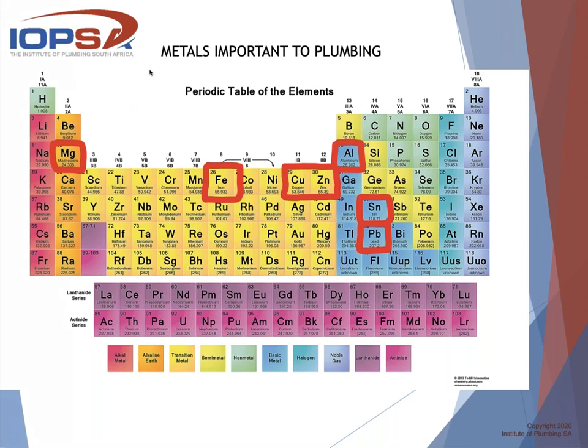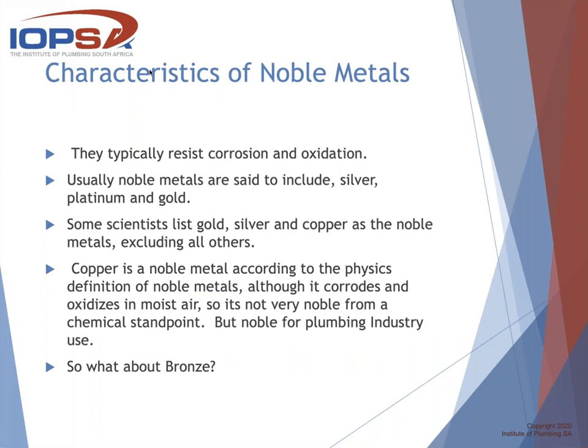Noble metals typically resist corrosion and oxidation. Corrosion occurs when you have moisture, metal, and oxygen together — all types of metals corrode in some fashion. Noble metals are said to include silver, platinum, and gold, though some scientists list gold, silver, and copper. Copper is a noble metal according to the physics definition, although it corrodes and oxidizes in moisture — we always see the green residue on copper. So it's not very noble from a chemical standpoint, but noble enough for the plumbing industry's use.